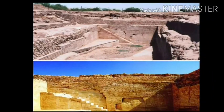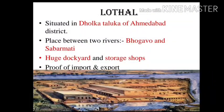These are some images from Dholavira. Lothal is situated in Dholka Taluka of Ahmedabad district, between two rivers — Bhugao and Sabarmati — and is 18 kilometers from the Bay of Khambhat. From Lothal, three layers of human habitation were found: the fort of rulers on the upper part, administrative officials in the middle, and common people on the lower part. The main feature of Lothal was its dockyard and granaries, suggesting it was an important center of trade and commerce. Export and import was undertaken through this port, indicating Lothal was a very rich and prosperous part of India.